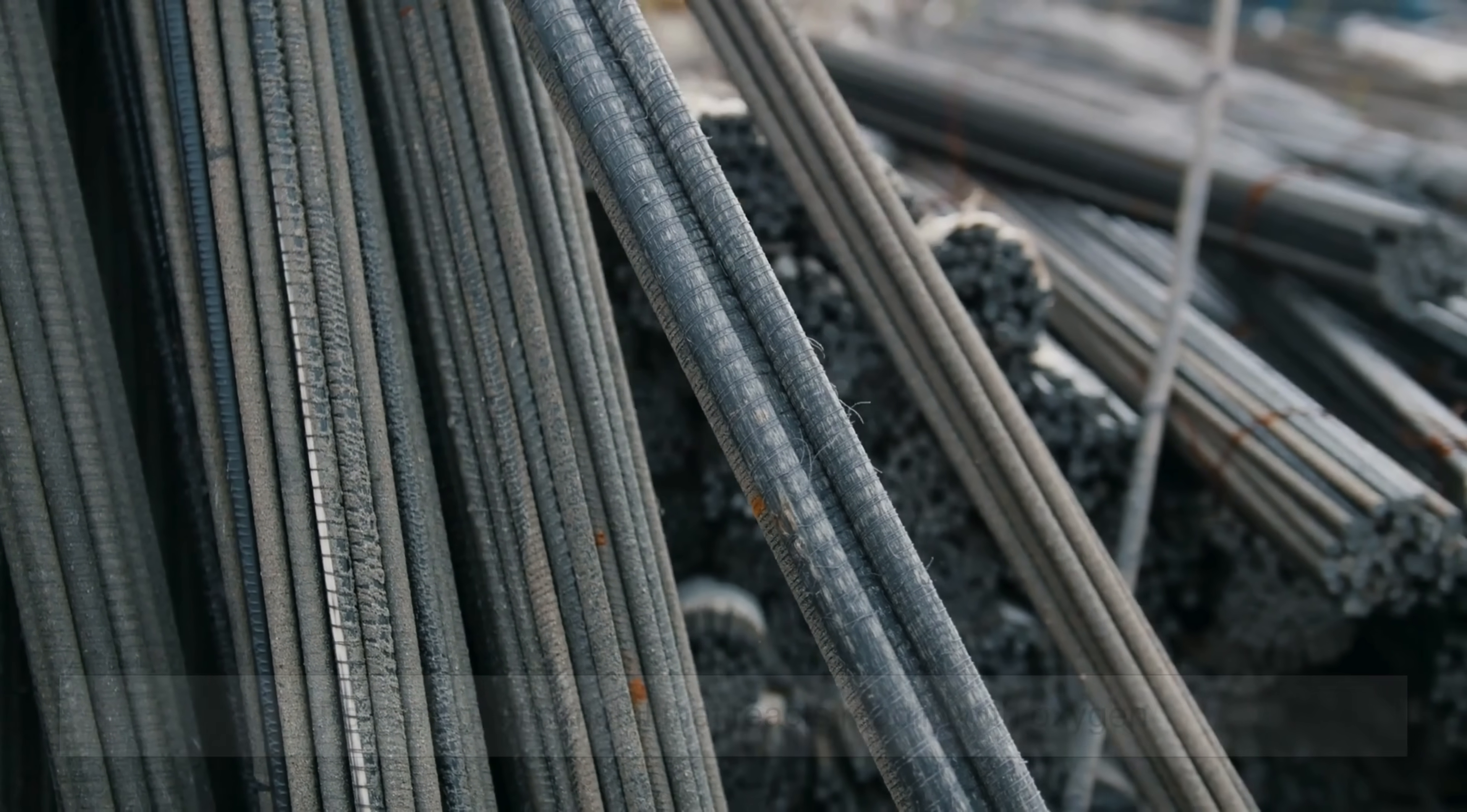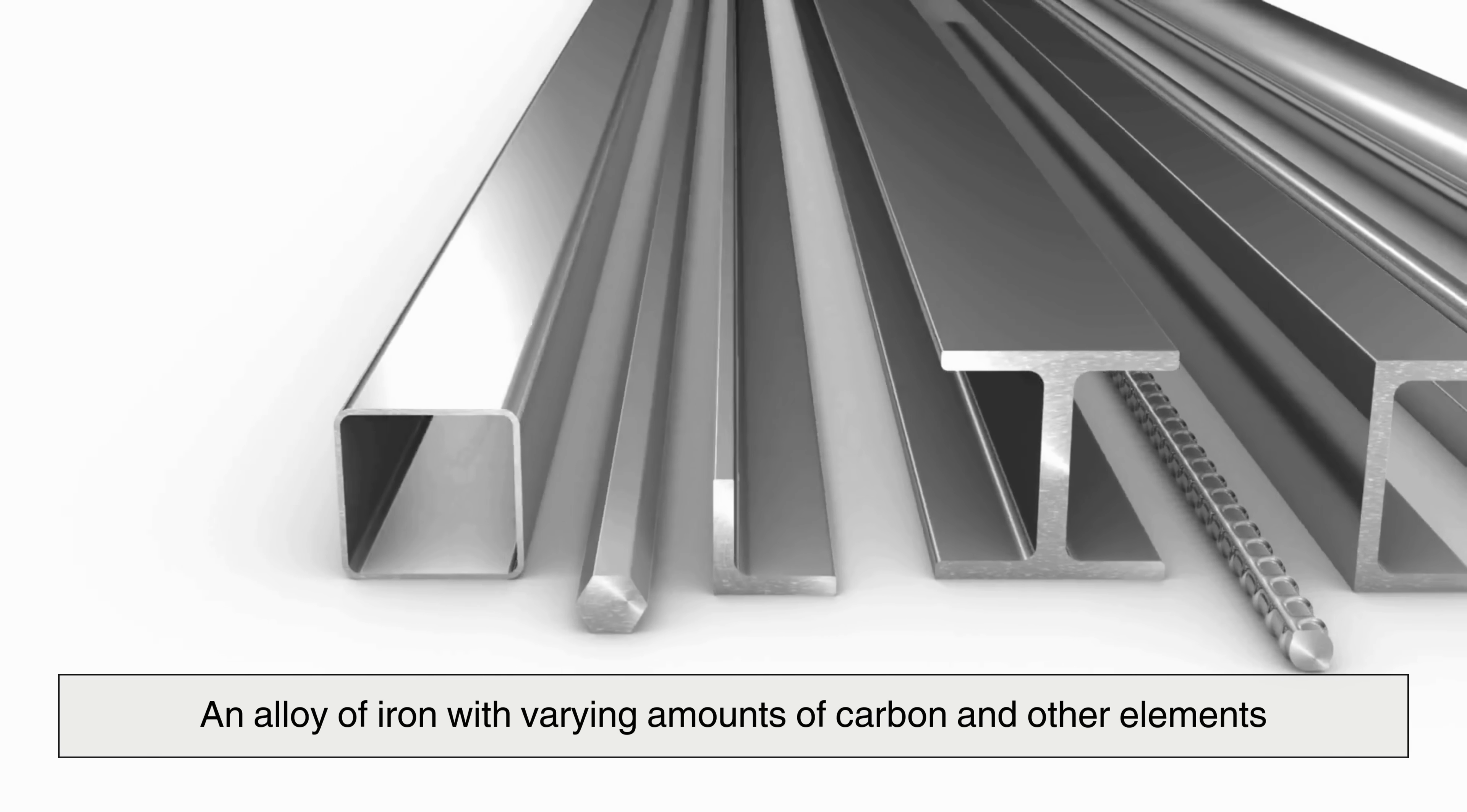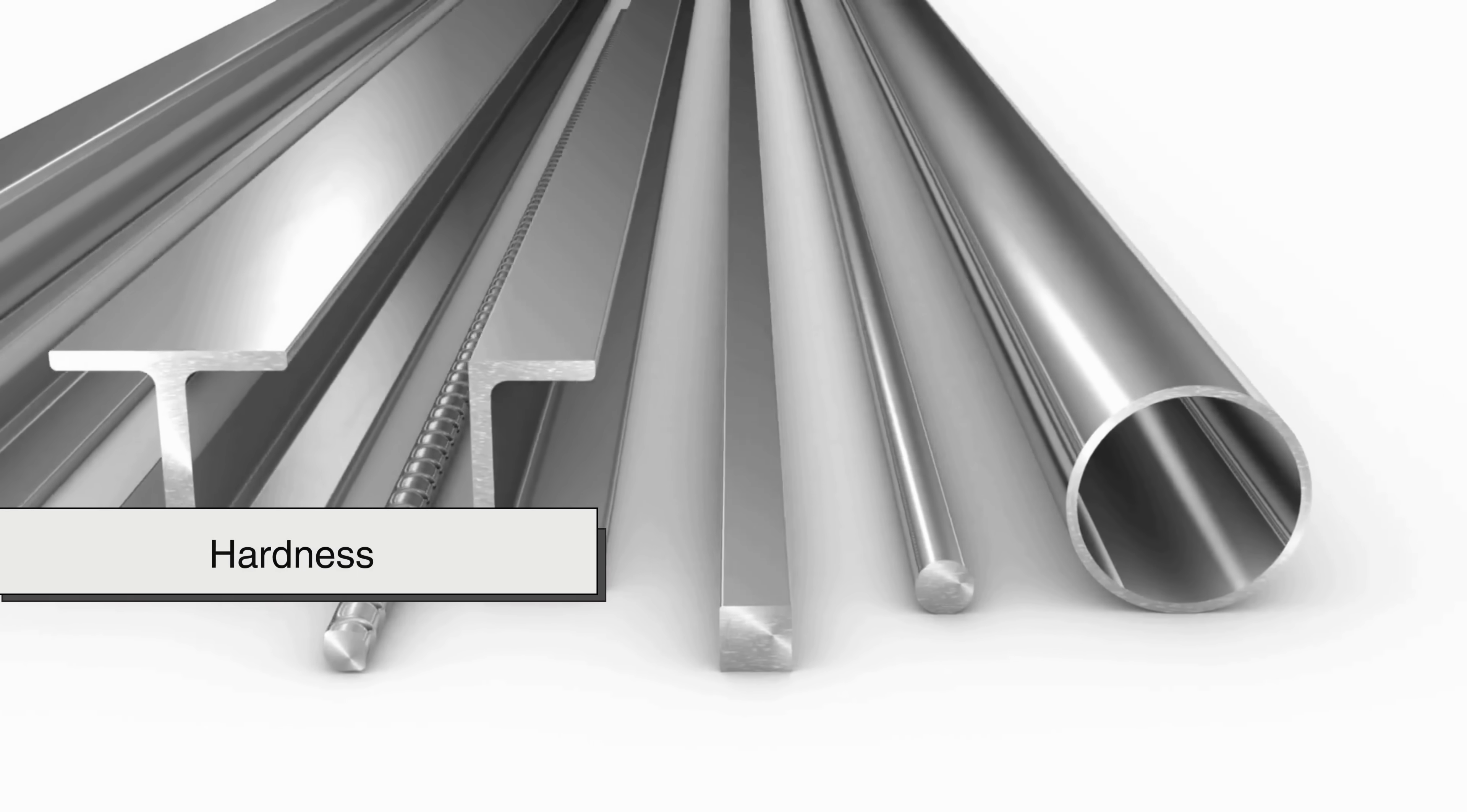To begin, we must examine the properties of iron and steel. Iron, the base element, is a ferromagnetic metal that reacts readily with oxygen, forming iron oxides. Steel, an alloy of iron with varying amounts of carbon and other elements, retains many of iron's properties, but can also include additives that alter its hardness, strength, and resistance to oxidation.